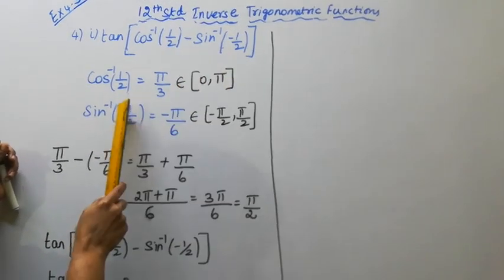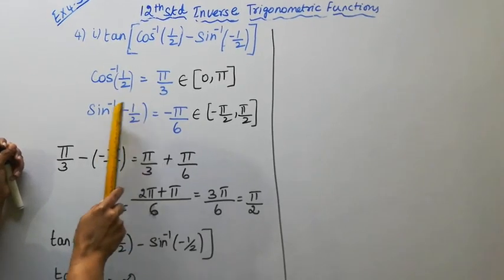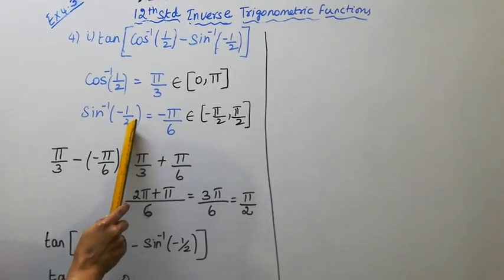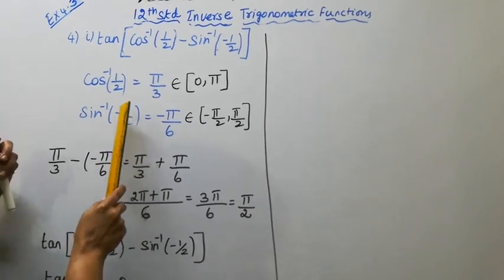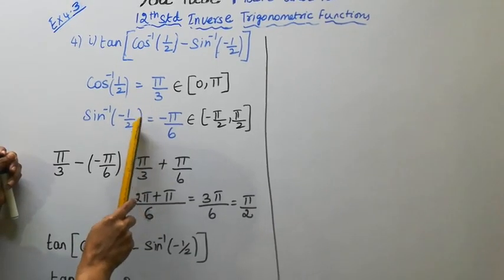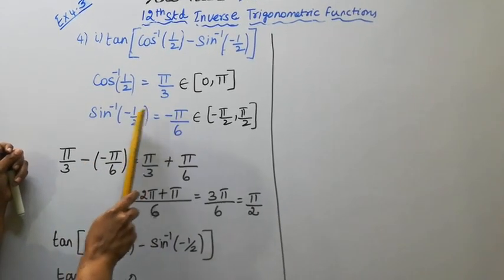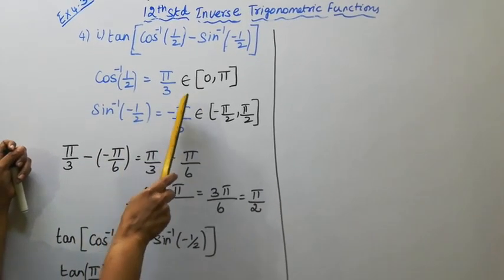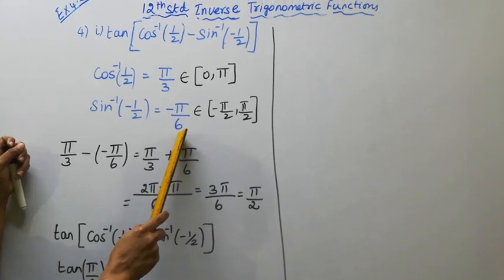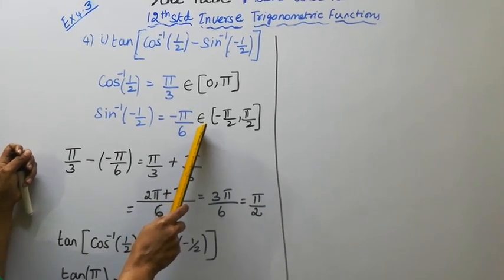Now find sin inverse of minus half. Sin inverse of half equals π/6, since sin(π/6) equals 1/2. Therefore sin inverse of minus half equals minus π/6.